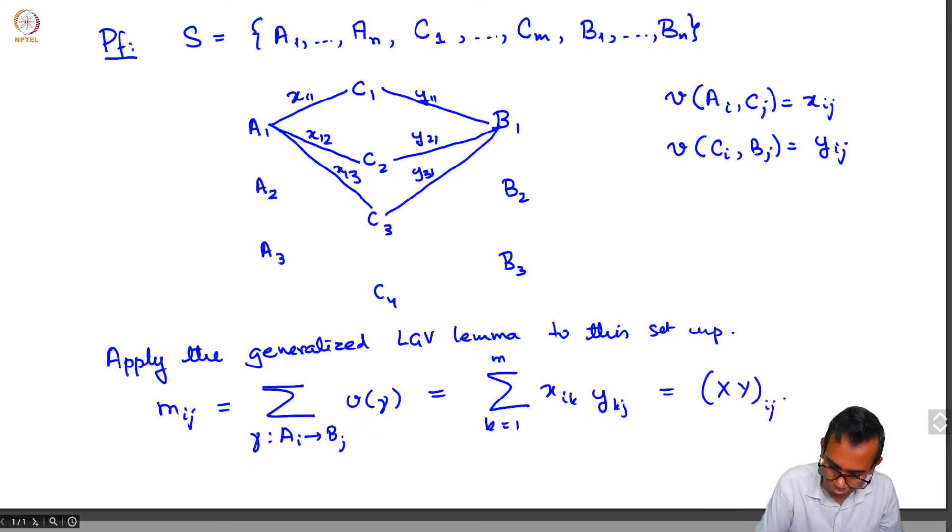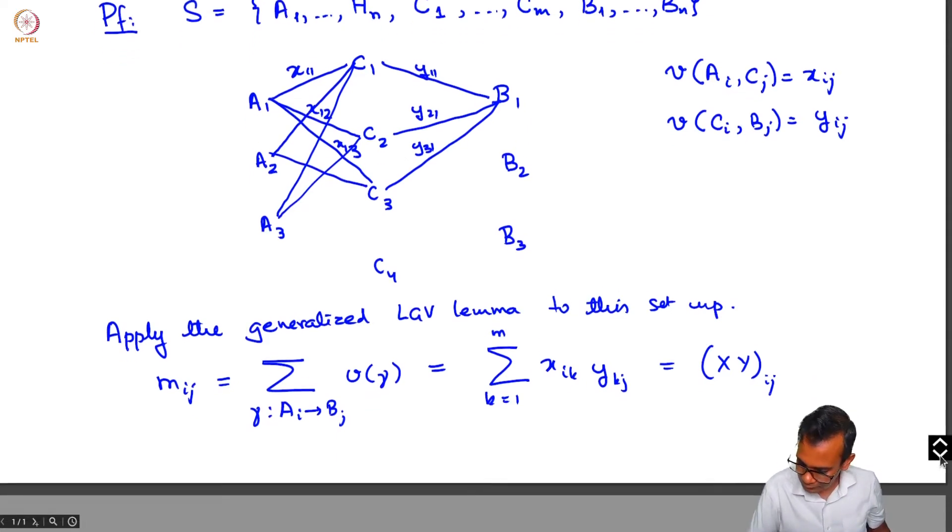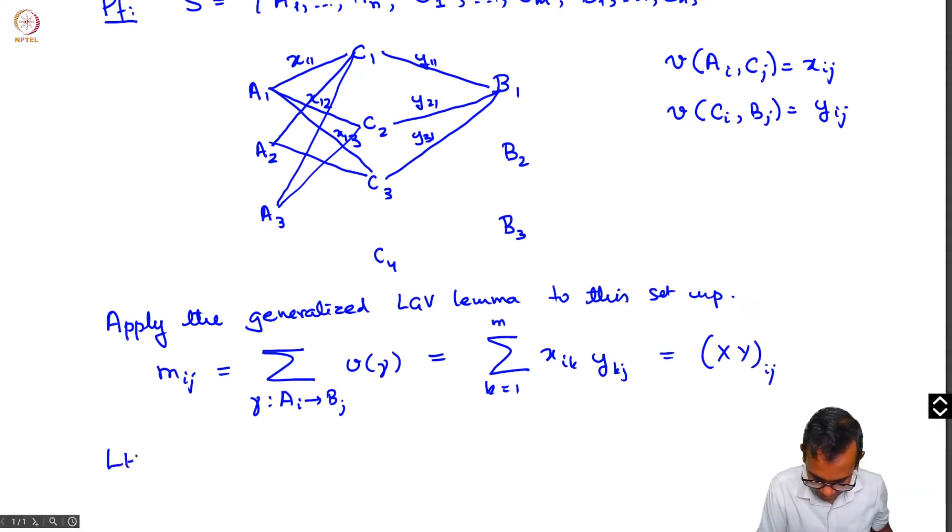Note that here we do not have the crossing condition, because you have, for example, this edge from a2 to c1 which crosses the edge from a1 to c2. So we have lots of crossings here. The crossing condition does not hold. Now, the left-hand side of the LGV lemma gives determinant of x times y.